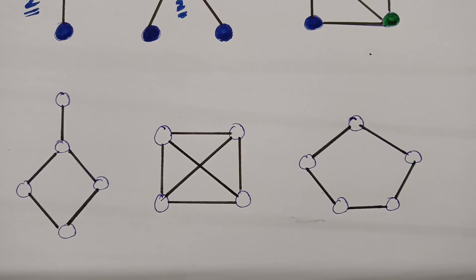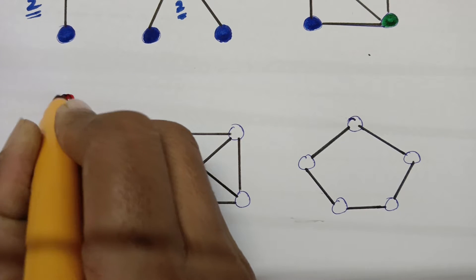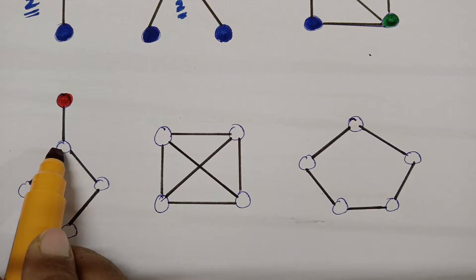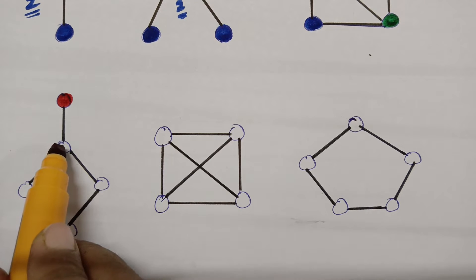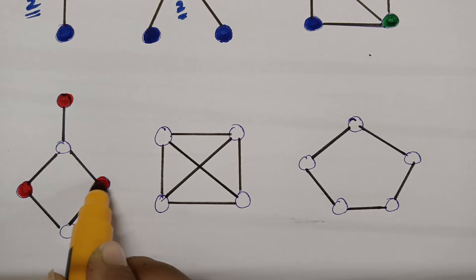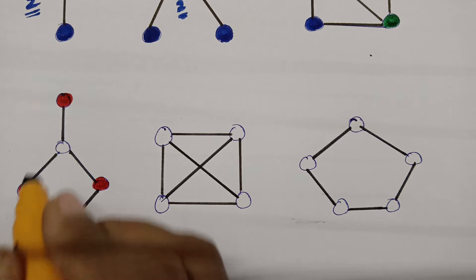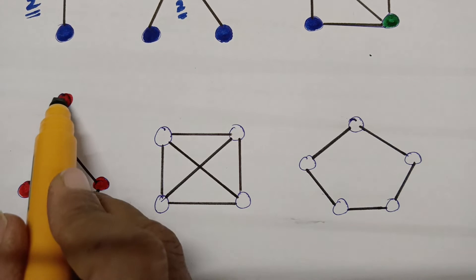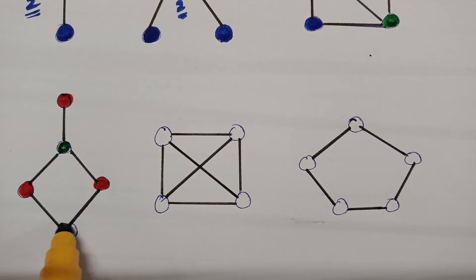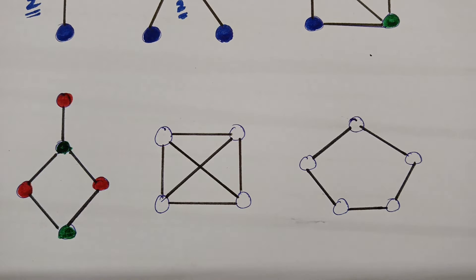For the next graph, I start with red color. I can't use red on adjacent vertices, but I can reuse red on non-adjacent ones. Then I use green where needed, and reuse green on non-adjacent vertices as well. Therefore the chromatic number of this graph is two.